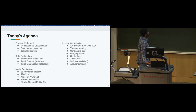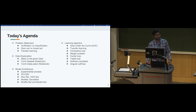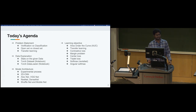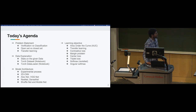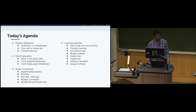What we'll be looking at today is the problem statement — what is verification and what is classification, what is open set versus closed set, and how you can use transfer learning for face verification. We'll also look at some statistics on the data, go through the dataset and dataloader classes, an example of residual block architecture, a few losses, model architectures you can experiment with, and objective functions for better performance.